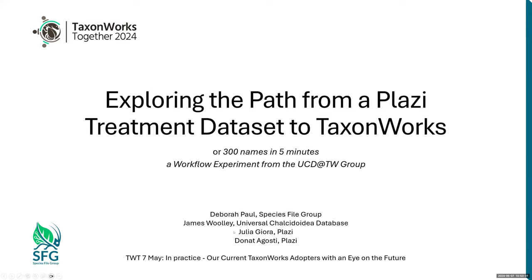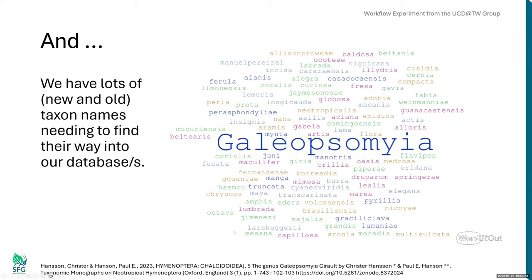And we're joined by Donat Agosti from Plazi and Julia Llora, if she can join us, but they're currently struggling with floods in Brazil. Many of us can relate that we have lots of taxon names. We either need them for our research, they're tied up in documentation that we have a hard time getting access to, or we need to update what we have. So in this case, we're using this paper as a key example of what we might be able to do to help make it a little faster.